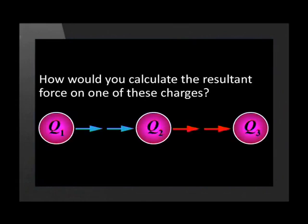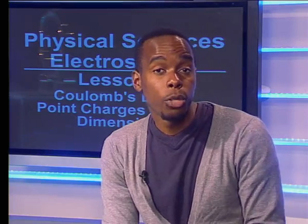How would we solve the problem if we have three charges in a straight line, and we are asked to find the resultant force on one of the charges? We will need to break the question up into parts and find the force between two charges at a time. After that, we find the resultant force on the point charge in question.